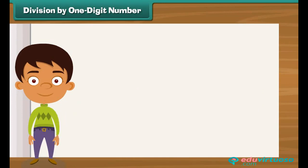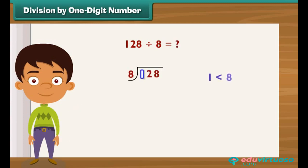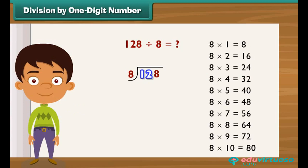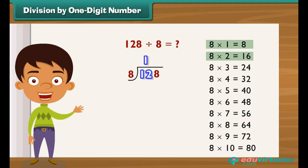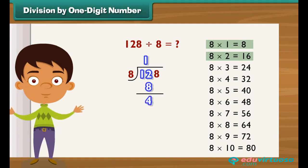Division by one-digit number. Let us divide 128 by 8. Since 1 is less than 8, we will divide 12 by 8. Recall 8's table: 8 ones are 8, 8 twos are 16. Since 16 is greater than 8, we use 8 ones are 8. Write 1 above 128, subtract 8 from 12 to get 4, then bring 8 down to form 48.